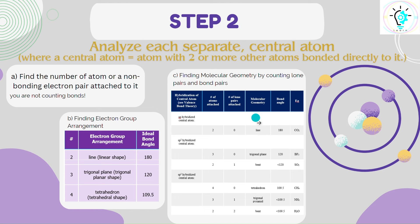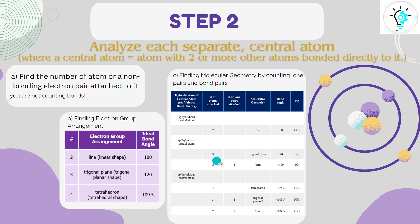If the central atom has two attachments and no lone pair, the geometry will be linear with a bond angle of 180 degrees — for example, carbon dioxide. If it has three attachments and no lone pairs, then it is trigonal planar, for example in BF₃. However, if it has two bond pairs and one lone pair, the structure changes to a bent shape, for example sulfur dioxide.